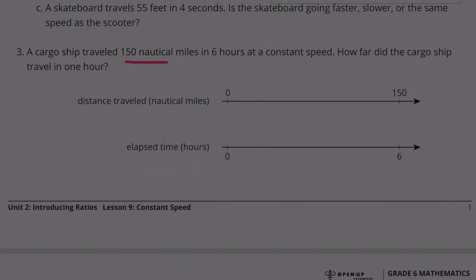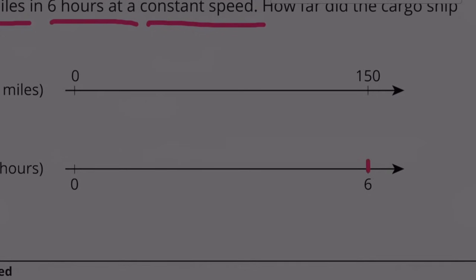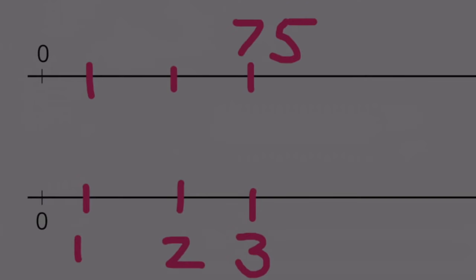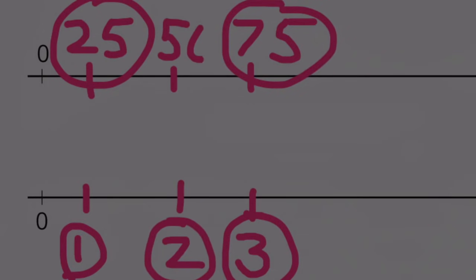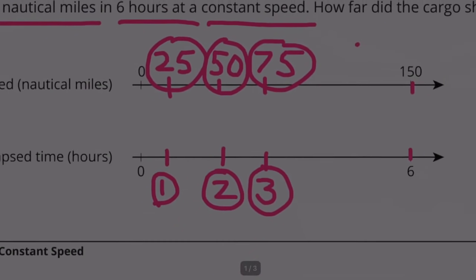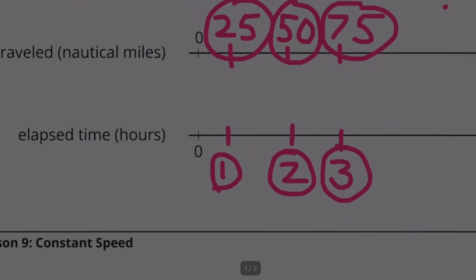Number 3: A cargo ship traveled 150 nautical miles in 6 hours at a constant speed. How far did the cargo ship travel in 1 hour? In 6 hours the cargo ship traveled 150 miles. I could cut 6 hours in half to find 3 hours: 150 divided by 2 is 75. Then 75 divided by 3 gives us 25 — it reminds me of quarters: 3 quarters is 75 cents. The cargo ship traveled 25 nautical miles in 1 hour.